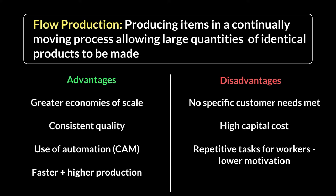One more cost to consider: if you're producing in large quantities, you have to store it somewhere. Storage costs go up under flow production because you're producing and storing in large quantities. As we'll learn in the next chapter, the concept of just-in-time inventory management can minimize spending on inventory, but storage is still a cost that has to be borne by the business using flow production.